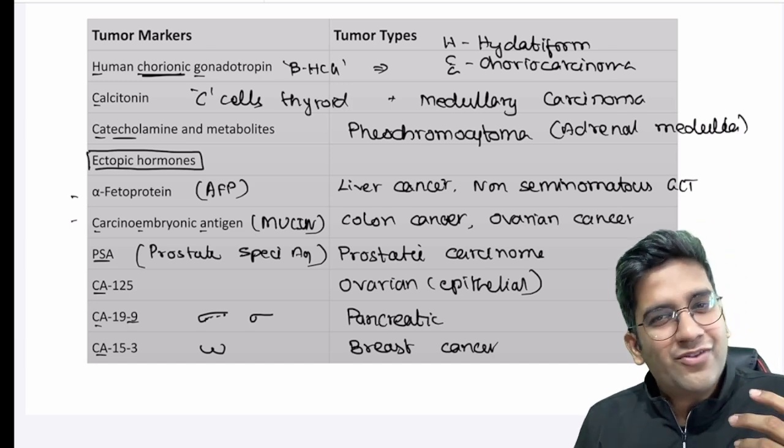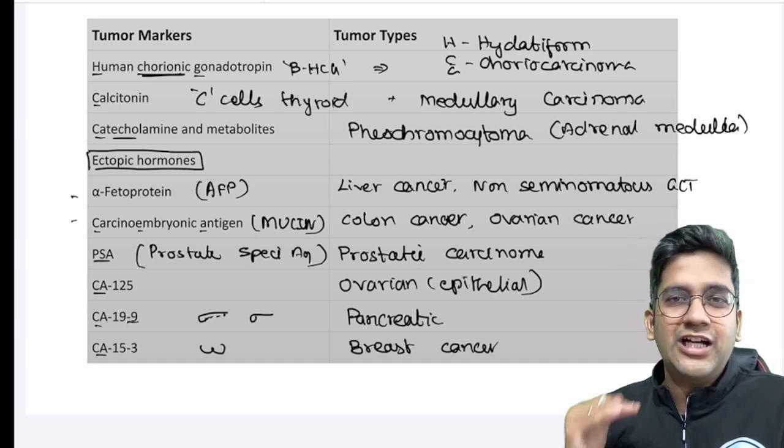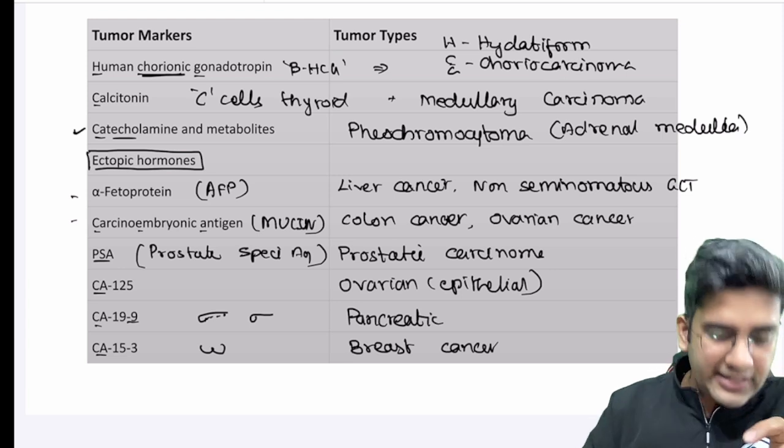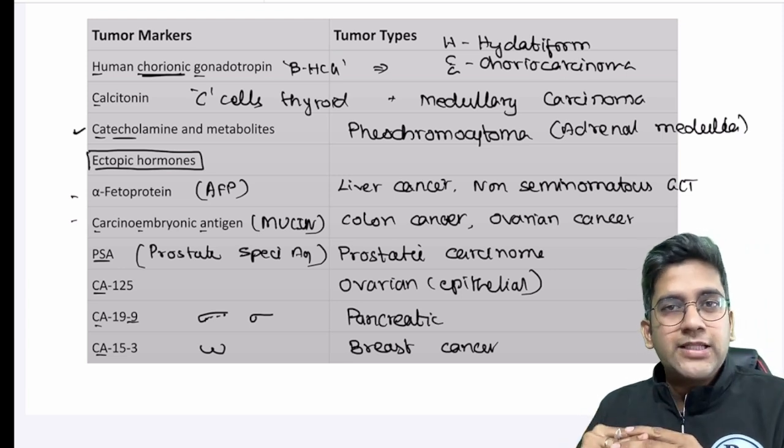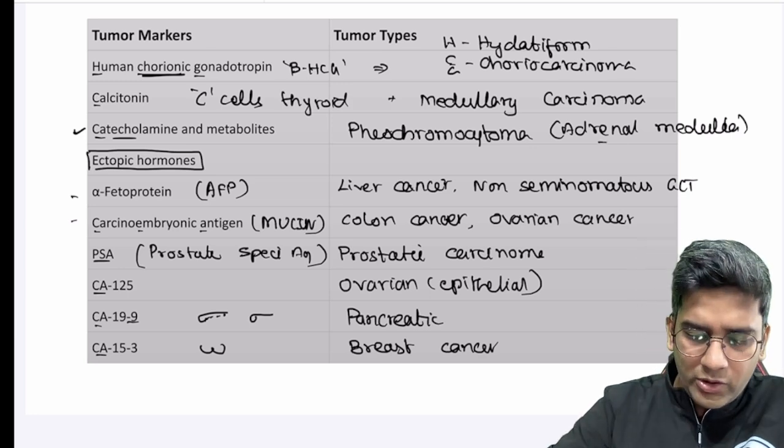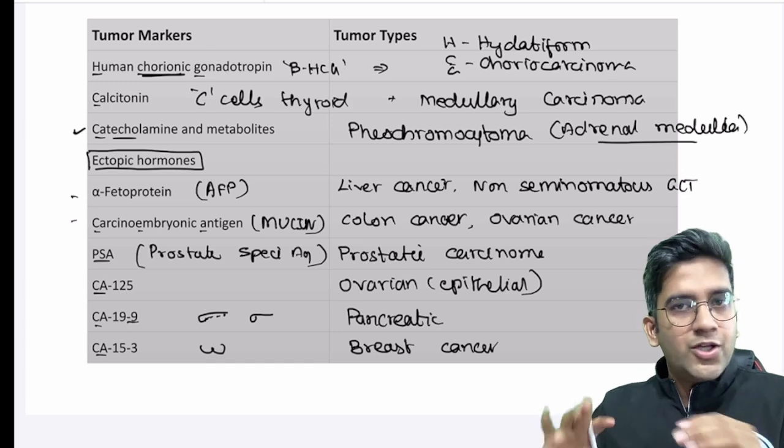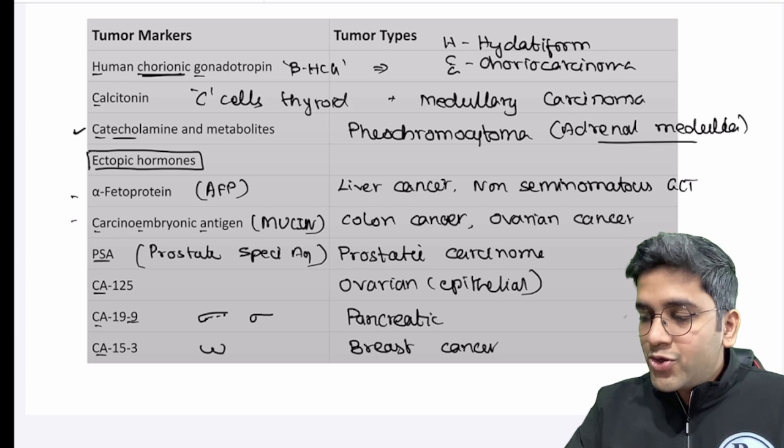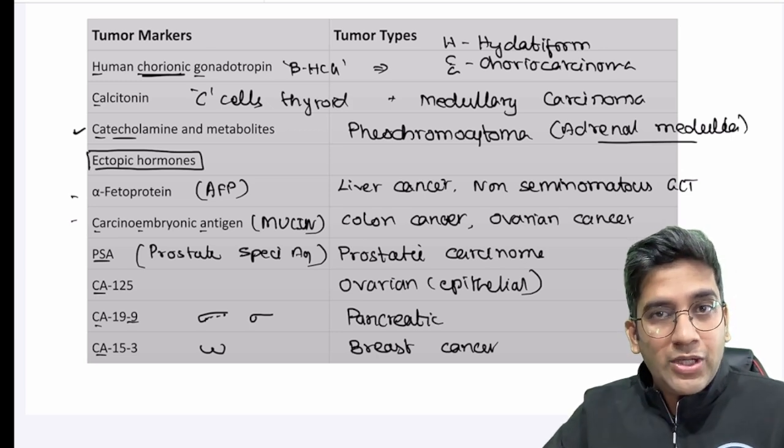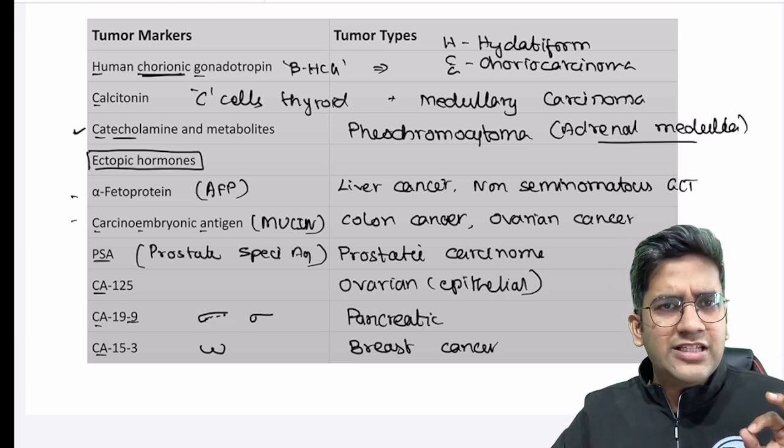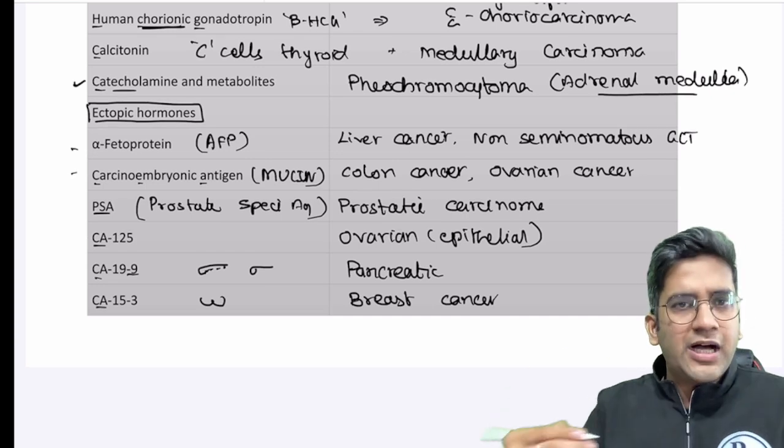Calcitonin which is produced from the parafollicular cells of thyroid, obviously in medullary carcinoma of thyroid, it will be elevated, not a big rocket science. This came in the recent INICET. Catecholamines which is epinephrine, norepinephrine or adrenaline, noradrenaline normally is produced from adrenal medulla. That's the normal site of production. Tumor markers are very simple. If you know the physiology, you know the pathology, as simple as that. So, whenever I have a tumor of adrenal medulla which is pheochromocytoma, definitely there will be an elevated catecholamines in the patient's blood.